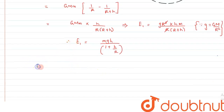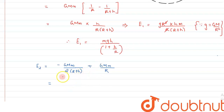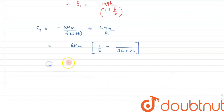Let E2 be the energy required to put the satellite into orbit. The total energy of a satellite revolving in orbit is given by −GMm / [2(R+h)], since we have studied that total orbital energy equals half the potential energy. Adding back the surface potential energy GMm/R, we get E2 = −GMm/[2(R+h)] + GMm/R. Taking GMm as common, we get 1/R − 1/[2(R+h)].